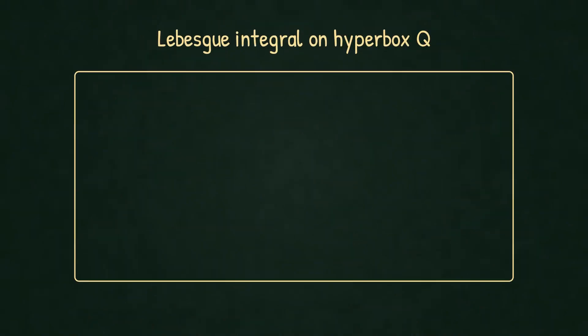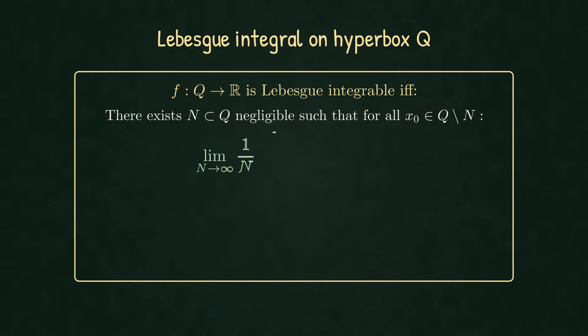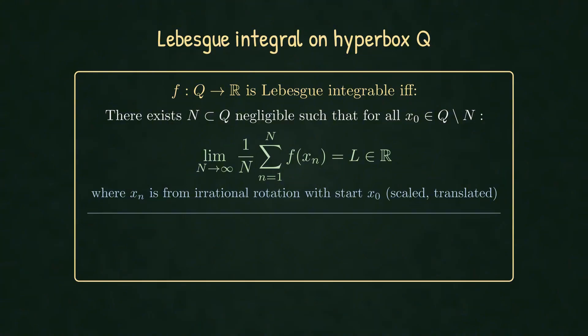So, here's the formal definition. A function f from Q to the real numbers is Lebesgue integrable if and only if there exists a negligible subset N of Q such that for all starting points x0 outside N, where xn is from irrational rotation with start x0 possibly scaled and translated, the limit of 1/N times the sum of f(xn) equals some L. Then we define the integral of f over Q equals L. This is the Lebesgue integral.